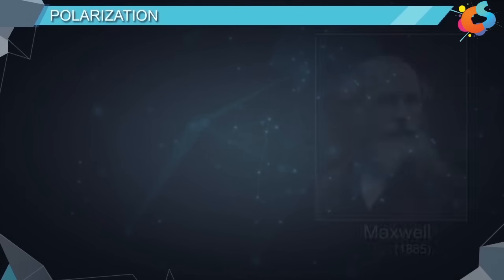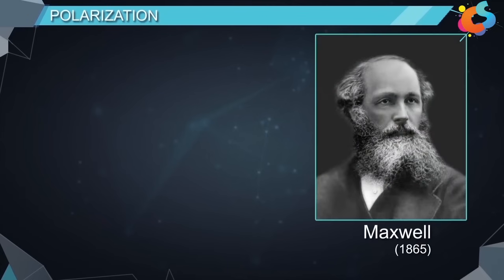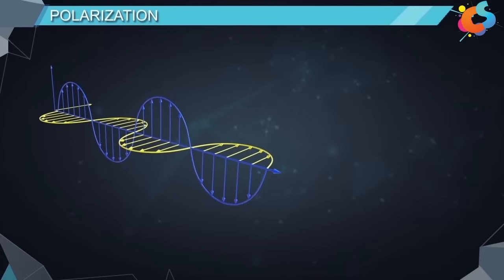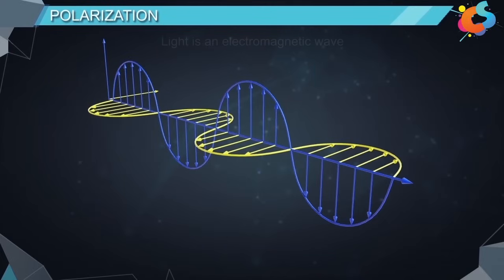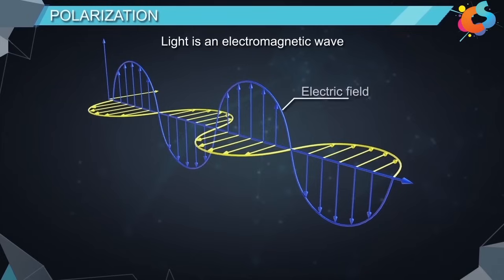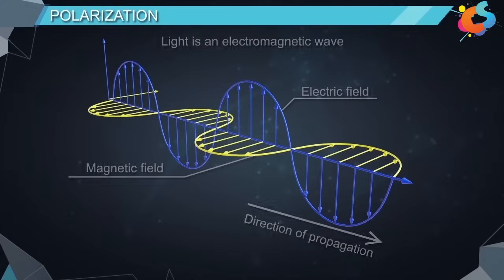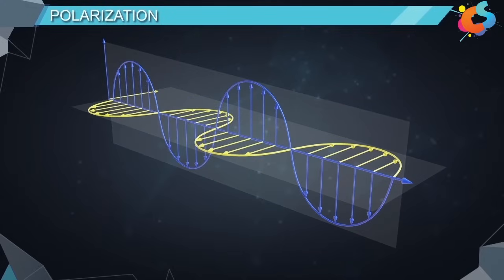Polarization. In the year 1865, Maxwell proposed electromagnetic wave theory. According to this theory, light is an electromagnetic wave. It consists of vibrations of electric field and magnetic field in a direction perpendicular to the direction of propagation. The vibrations of electric field and magnetic fields are confined to two different planes that are mutually perpendicular to each other.